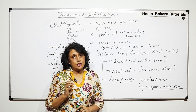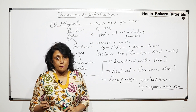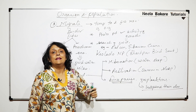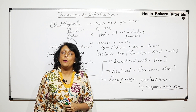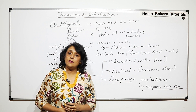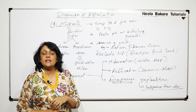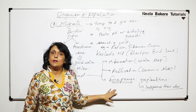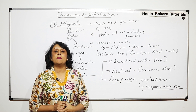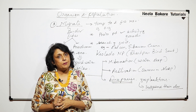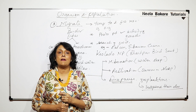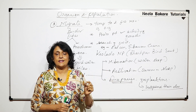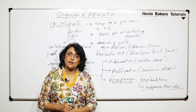Whether it is regulation — thermoregulation or osmoregulation — or conformation, or whether it is migration or suspension of metabolic activities, animals are able to cope with abiotic conditions. All of this is possible because they have various kinds of adaptations, and these adaptations help them cope with abiotic conditions. We will take some important examples and their adaptations in the next part.